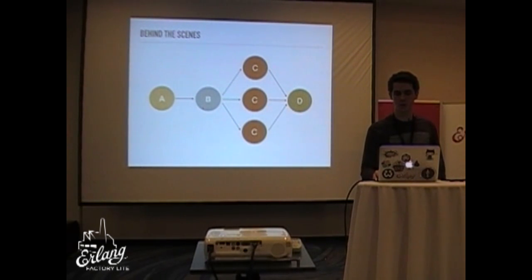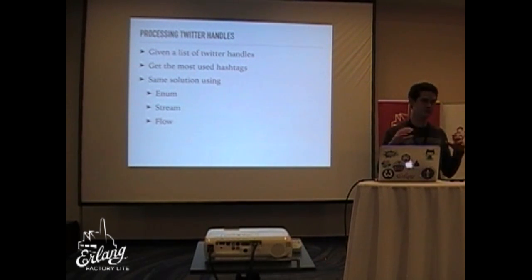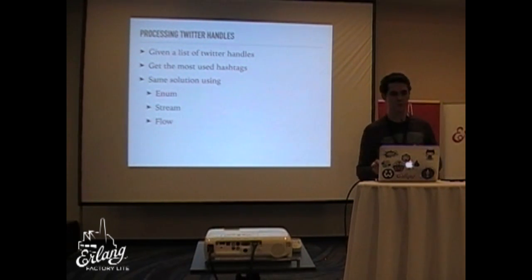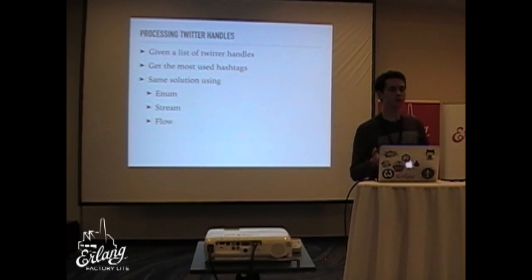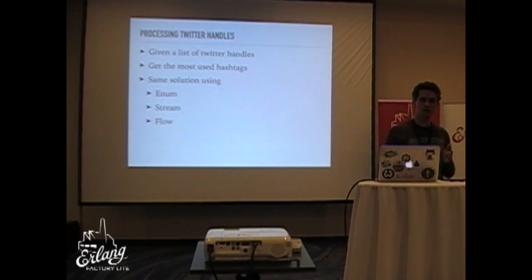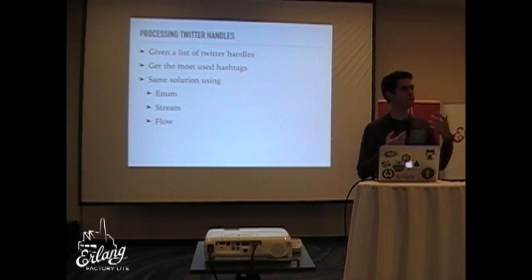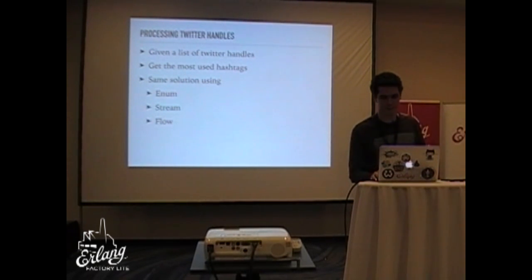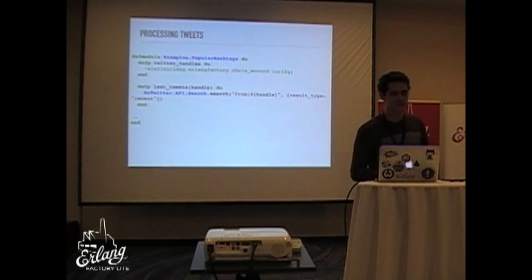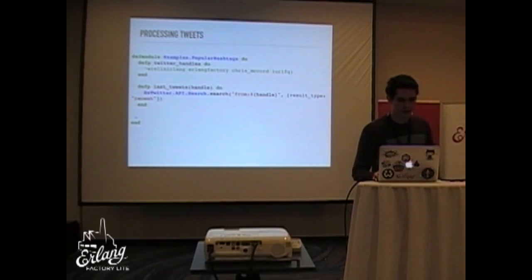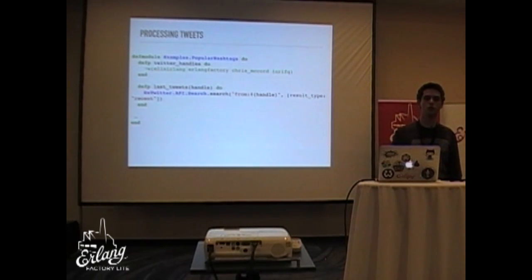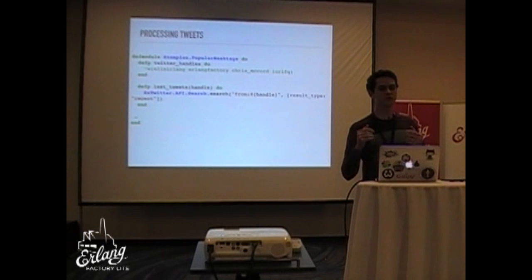Let's show a more real example — processing Twitter handles. Given a list of Twitter handles, get the most used hashtags. We'll solve this with three modules: Enum, Stream, and Flow. Enum is the traditional eager way, Stream is a bit more lazy, and Flow is lazy and concurrent at the same time. First we define some small functions: handles like elixir_lang, thelinefactory, prismacloud, even if P. `last_tweets` will use a library to call Twitter's API and return recent tweets.